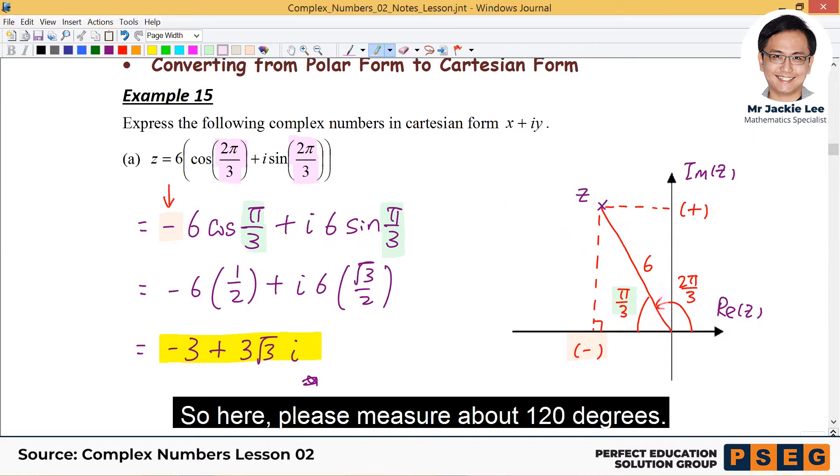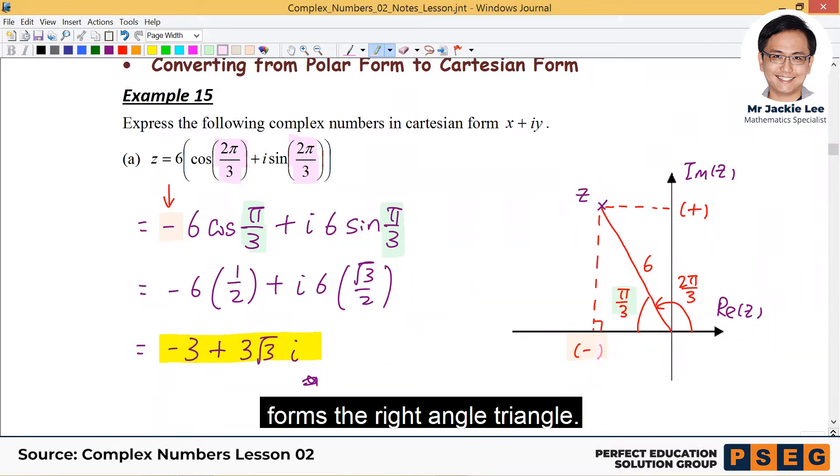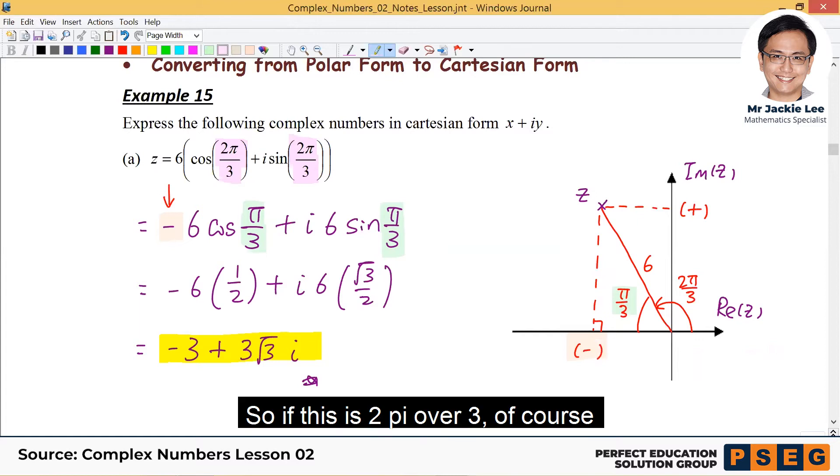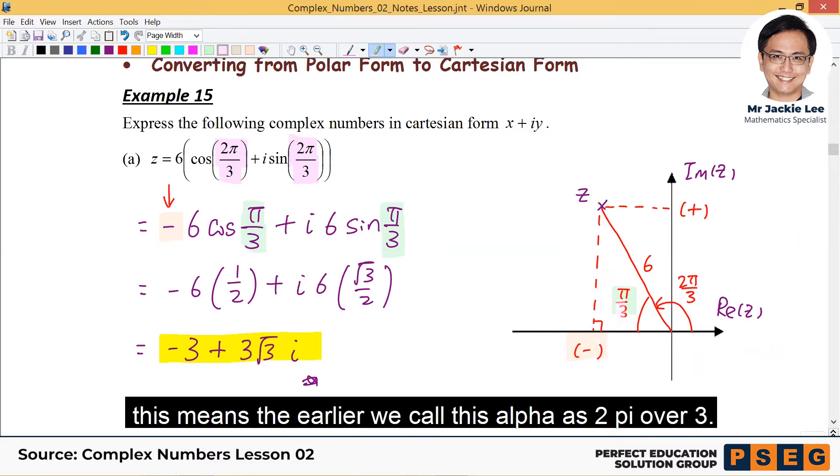So here, please measure about 120 degrees. After that, say somewhere here is the z, form the right angle triangle. So if this is 2π over 3, of course, this remaining, earlier we call this as the alpha, π over 3 already.